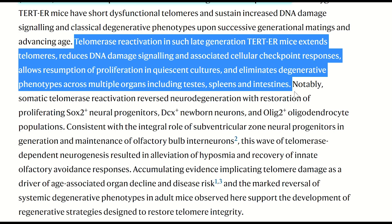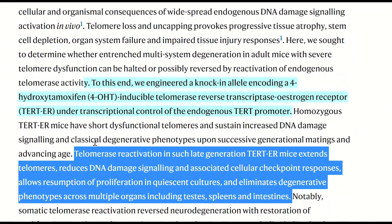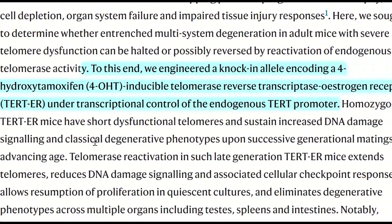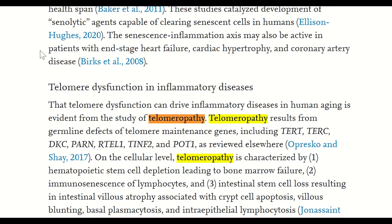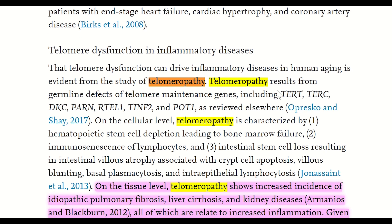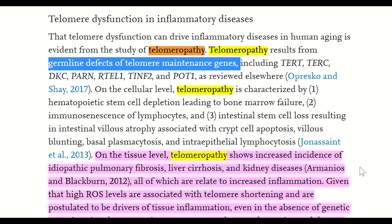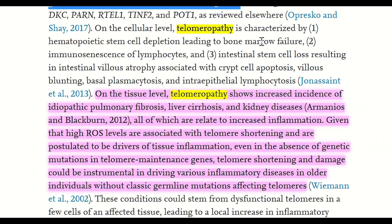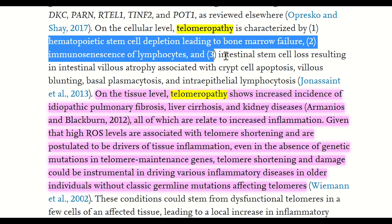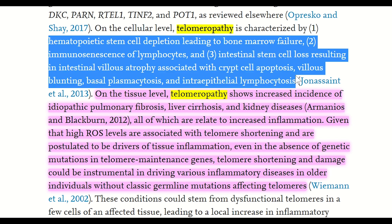In these mouse models, TERT expression can be controlled by the presence of a drug. We also have evidence from human studies, particularly from patients with telomeropathies — mutations in genes encoding TERT and TERC, as well as other proteins regulating telomere maintenance. Patients with these conditions show many ageing phenotypes, such as depletion of hematopoietic stem cells leading to bone marrow failure, immunosenescence of lymphocytes, and increased incidence of idiopathic pulmonary fibrosis, liver cirrhosis, and kidney diseases.